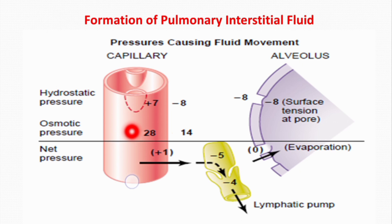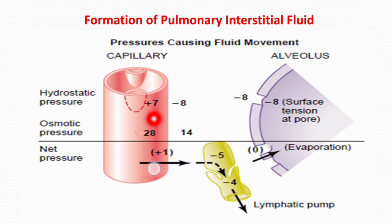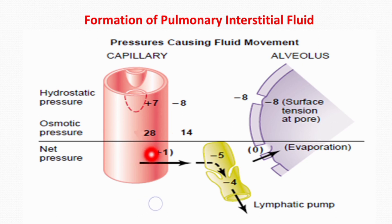The net outward force is 14 plus 8 plus 7, which equals 29 mmHg. From this we subtract the inward force — plasma colloid osmotic pressure of 28 mmHg — giving 29 minus 28 equals 1 mmHg. This means the net pressure causing formation of interstitial fluid in the pulmonary vessels is 1 mmHg.